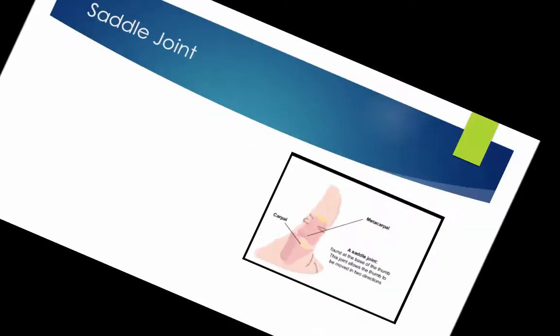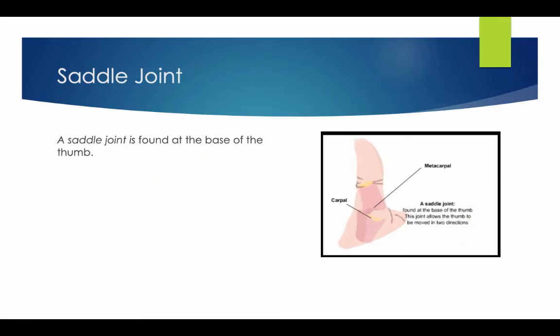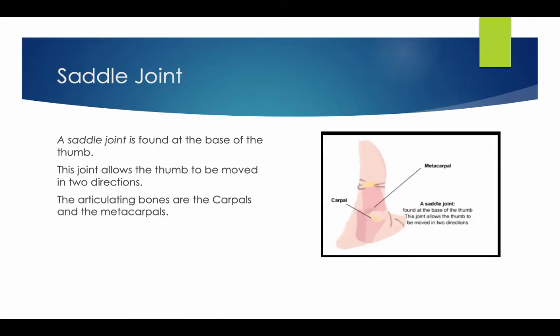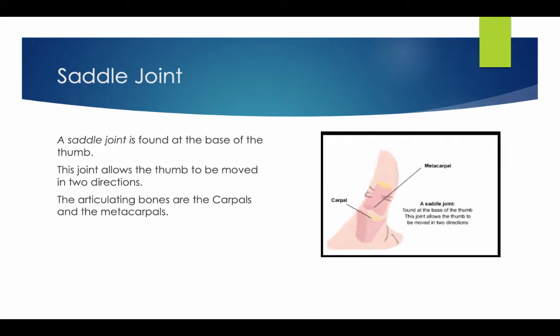And finally, the saddle joint. A saddle joint is found at the base of the thumb. This joint allows the thumb to be moved in two directions. The articulating bones are the carpals and the metacarpals.